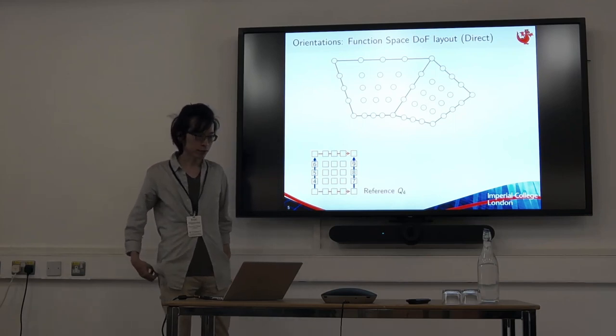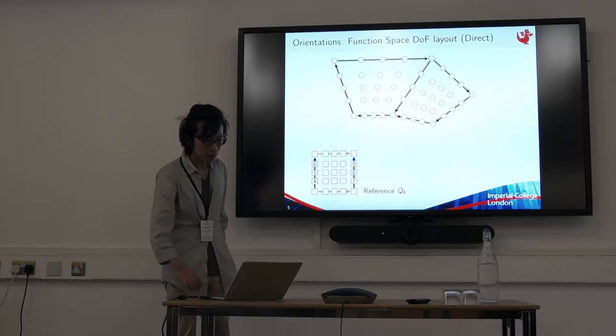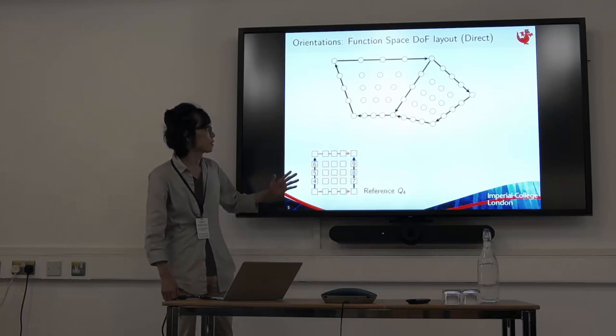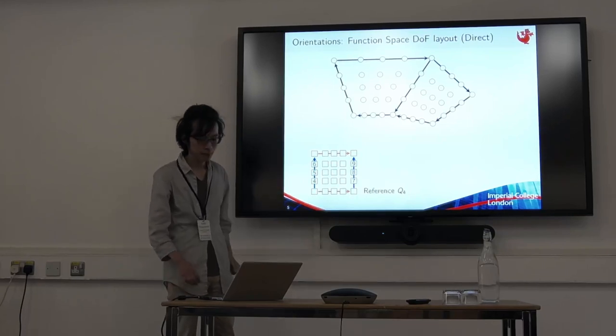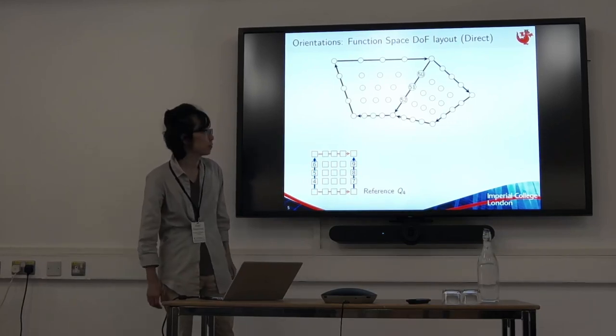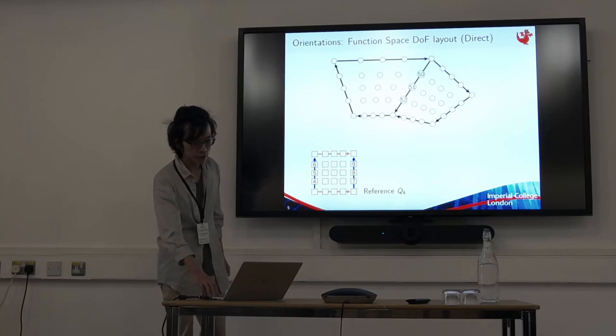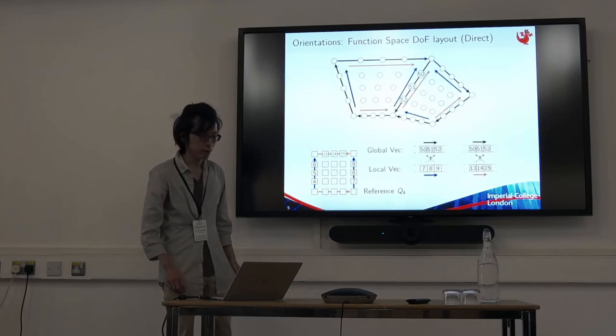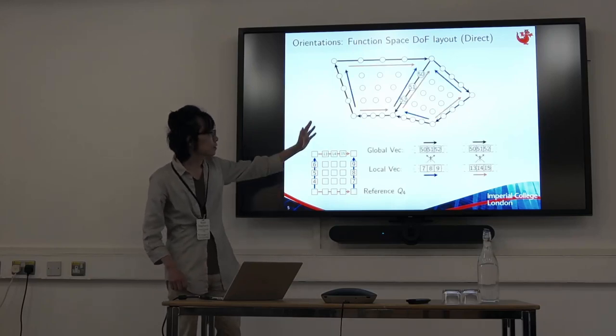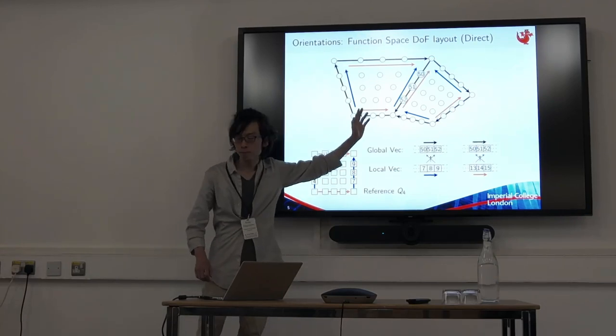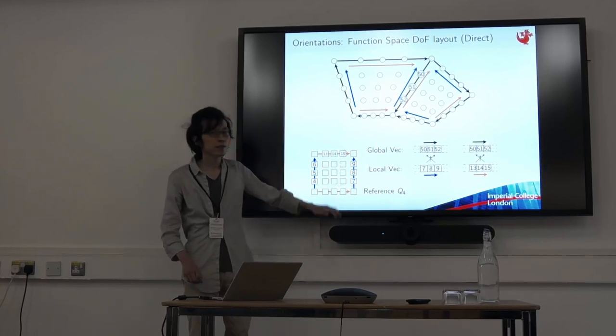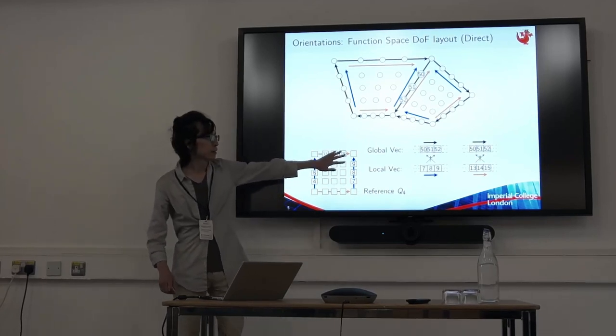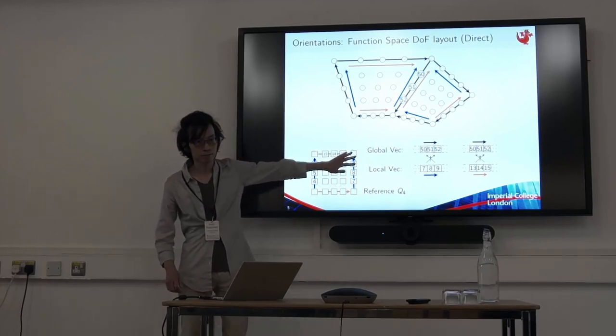This is how we do it in FireDrake currently. What we do is we determine edge orientations first independent of the mapping and then already order those. And then we think about how we do mappings.